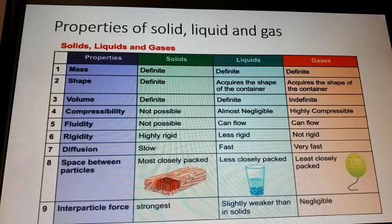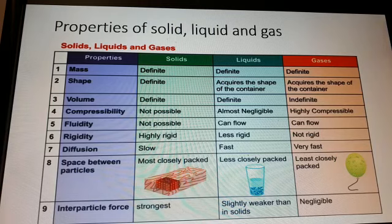In liquids, particles are arranged randomly and are close together, vibrating and able to move past one another. There is a weak attractive bond between the particles, so liquid can flow. Particles are quite close together but cannot be forced much closer, so liquids are incompressible.